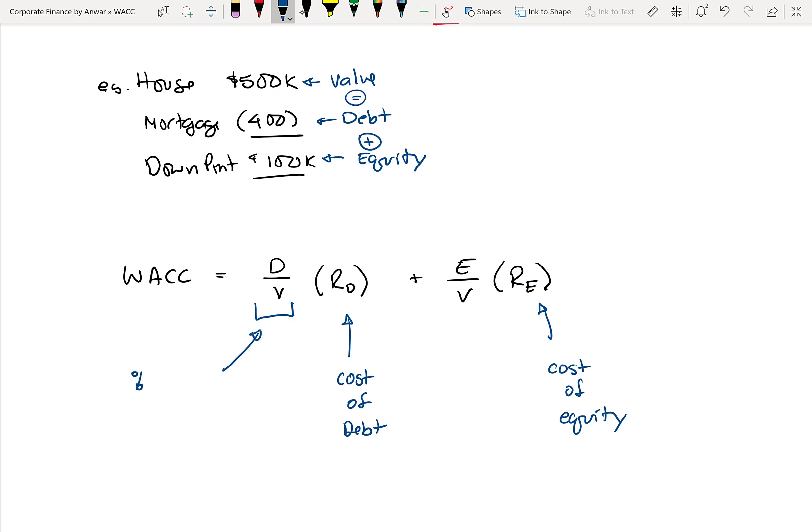And D over V essentially just tells you what percentage of your company is being financed by debt. And E over V similarly will tell you what percentage of your company is being financed by equity. So you're just taking a weighted ratio of the two, which is why it's called a weighted average cost of capital.